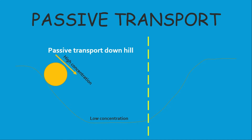Passive transport, simply put, is like rolling a ball down a hill. At the top of an incline we have particles in high concentration, and getting down to the bottom represents moving down the concentration gradient. This ball rolling from high concentration to low concentration is the best analogy for passive transport — it is simply moving substances from one concentration to another without using any energy from the cell.